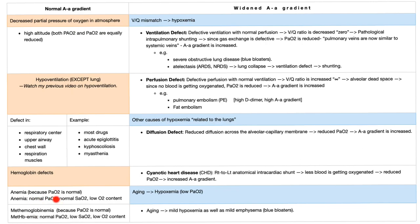In anemia, P(a)O2 is normal, saturation is normal, but oxygen content is low because of decreased hemoglobin amount. In methemoglobinemia, P(a)O2 is normal but SAO2 is low because less oxygen binds to hemoglobin — it's Fe3+ not Fe2+, and only Fe2+ can bind O2 — and oxygen content is low. So these are hemoglobin defects: the problem is not in the lung.